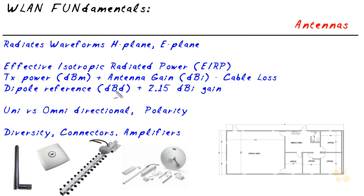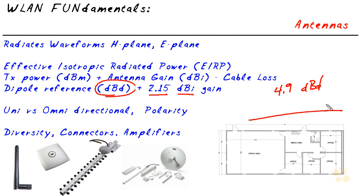Another term is dBd, which refers to decibel gain in relation to a dipole antenna. The dipole antenna has a gain of 2.15 dBi. So if you're looking at antennas and one says it has a 4.9 dBd gain, to convert to dBi you simply add 2.15 — making it 7.05 dBi. Anytime you're given an antenna gain in dBd, add 2.15 to find the equivalent dBi.